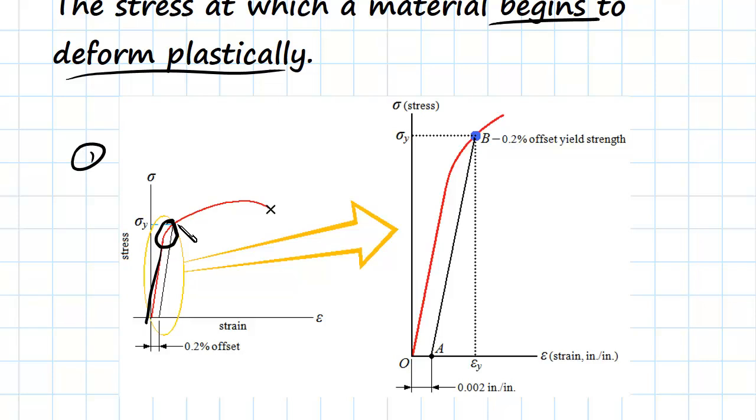So if we haven't been given the yield strength and it's something that we need to determine from a graph, then we use a method in which we do a 0.2% offset.